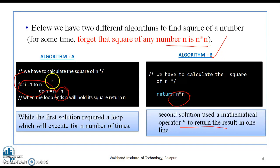Now, to calculate the square of n in algorithm A, we have for i equal to 1 to n, do n is equal to n plus n. The first solution required a loop which executes for n number of times.